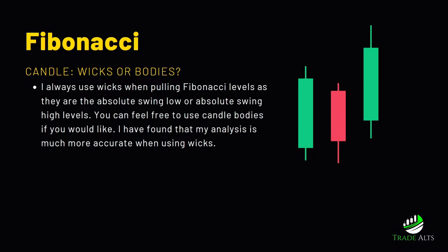A quick tip before the live examples: do I use wicks or bodies when pulling Fib retracements? This is something that's a bit split. Some people pull from the wicks, which is what I do, and others use the candle bodies. The wicks are the thin lines extending from the body of the candle, and they represent the highest or lowest price traded within that specific candle.